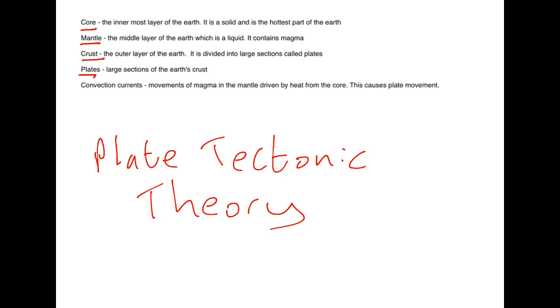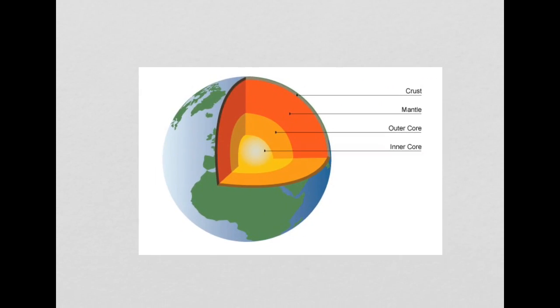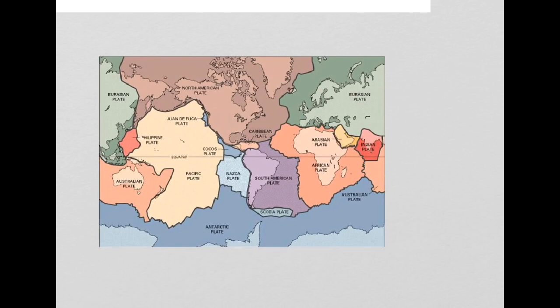Plates are large sections of the earth's crust. The outer layer of the earth's surface is divided into large sections which are called plates. This diagram shows some of the main plates.